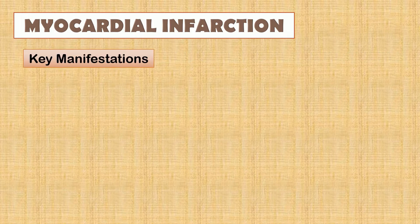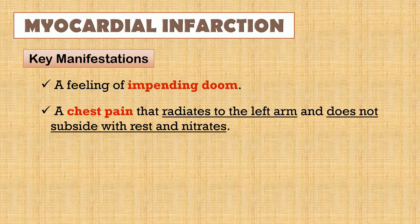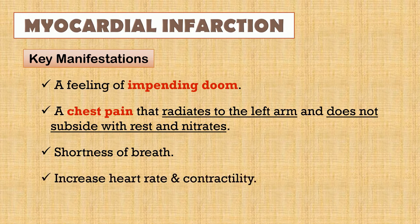Key manifestations. First, we have a feeling of impending doom. Next, a chest pain that radiates to the left arm and does not subside with rest and nitrates. Due to the continuous decrease in oxygen supply, the patient will experience shortness of breath. Increased heart rate and contractility occurs when the sympathetic nervous system is stimulated to release epinephrine and norepinephrine due to decreased cardiac output.